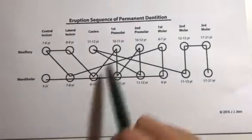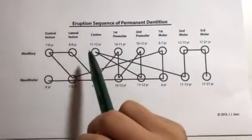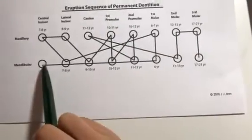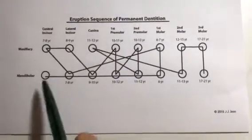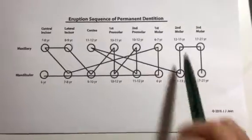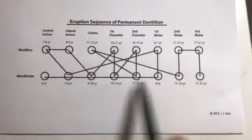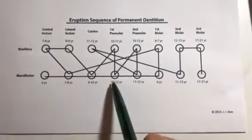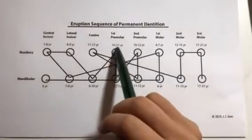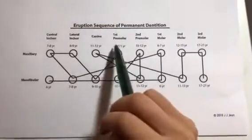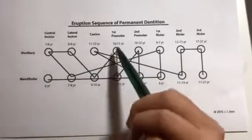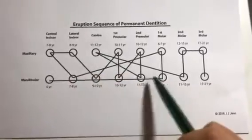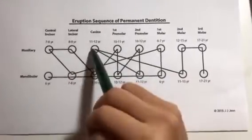So the rhythm is: 8, 9, 9, 10 — 10, 11, 10, 12, 10, 12, 10, 12, 11, 12, 11, 12, 11 — 11, 13, 12, 15, 17, 21, 17, 21. I chunked them: 6, 6, 6 — triangle of sixes; 7, 7; 8, 9, 9, 10; 10, 11 — 10, 12 — 10, 12 — 11, 12. You just memorize those two numbers as a range. The canine from the anteriors is the same: 11, 12, 11, 12.